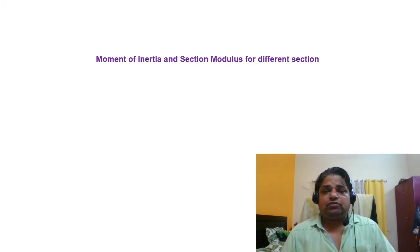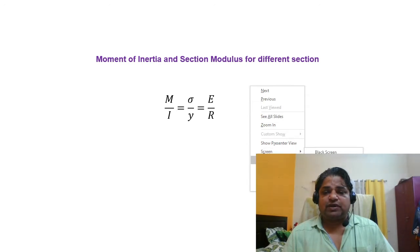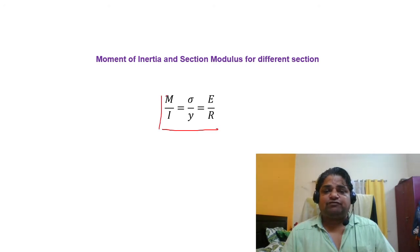We are going to discuss these points in this video — the physical meaning of moment of inertia, how it affects the design or structural configuration. We know the moment of inertia and section modulus for different sections. From the equation M/I = σ/y, I have already discussed what is M, what is I, and what is I/y. We wrote sigma = M/Z, where Z is the section modulus, and Z = I/y.